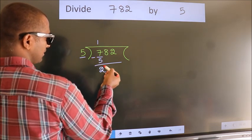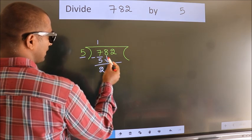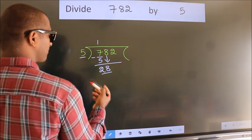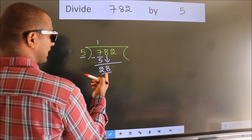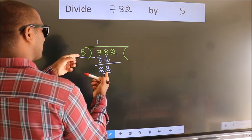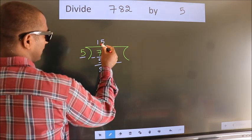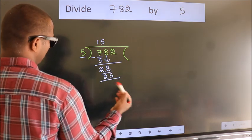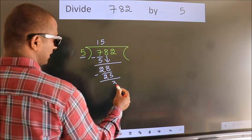After this, bring down the next number. So, 8 down, making 28. A number close to 28 in the 5 table is 5 fives, which is 25. Now, we subtract and get 3.